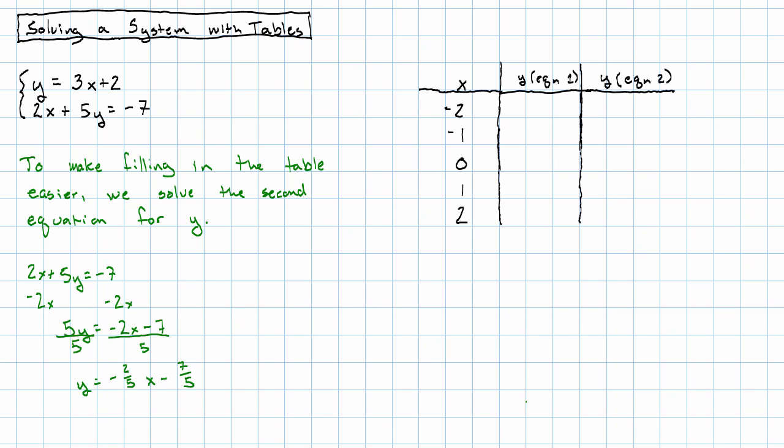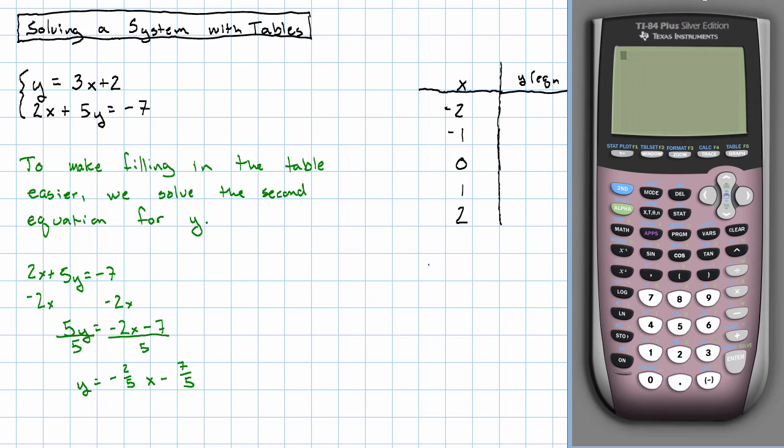Okay. So for the first equation, we're going to plug in each of these values of x. So 3 times negative 2 plus 2 is negative 4. 3 times negative 1 plus 2 is negative 1. Oh, I see what's happening. I'm going to go up by 3 every time, right,